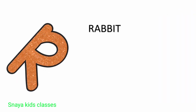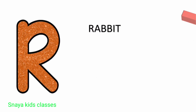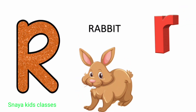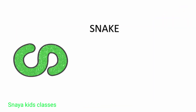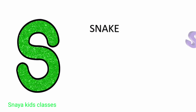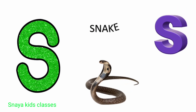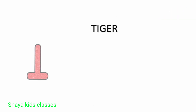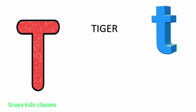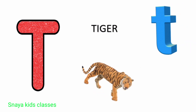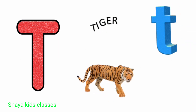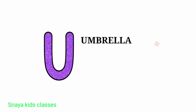R. R for rabbit. S. S for snake. T. T for tiger. U for umbrella.